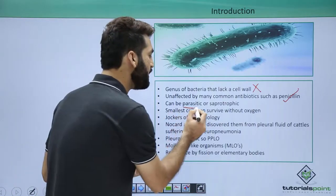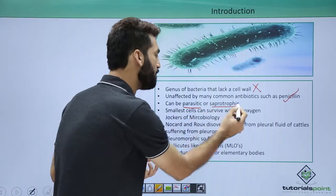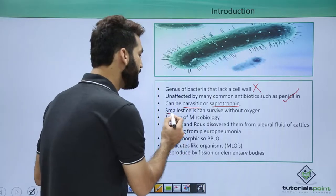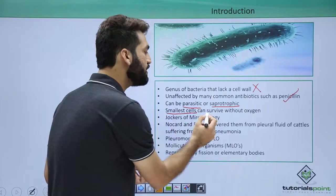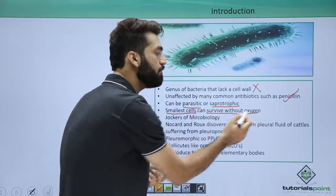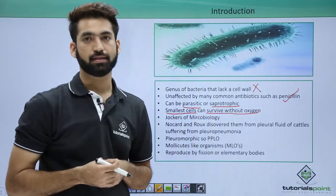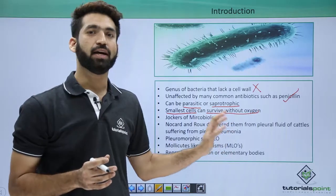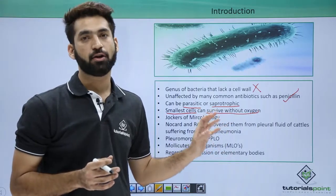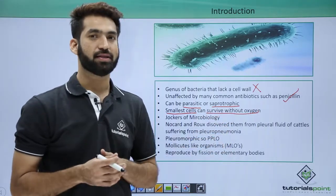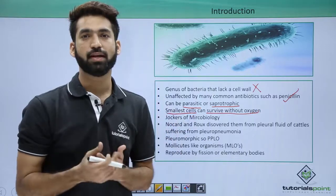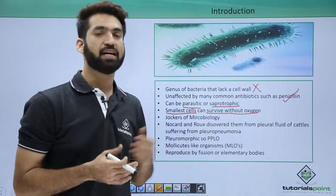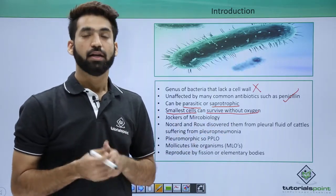Mycoplasma can be parasitic or saprophytic. Always remember they are the smallest cells which can survive without oxygen, meaning they can survive in anaerobic conditions. Out of all the cells present on earth, Mycoplasma are the smallest cells.